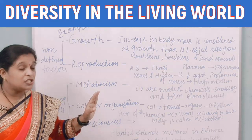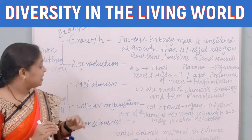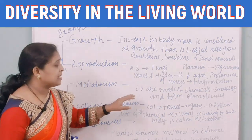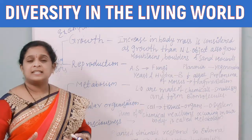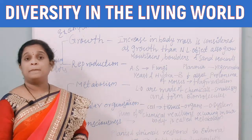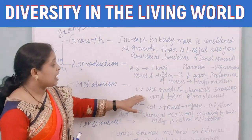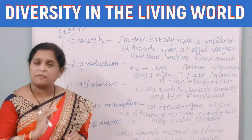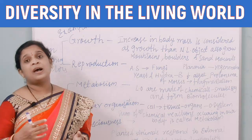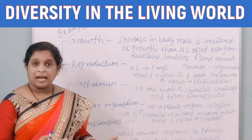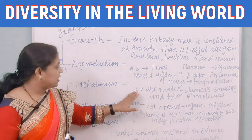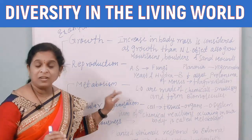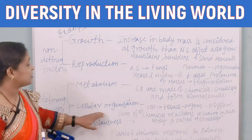So reproduction is also not considered a defining character — it comes under non-defining factors. The next one is metabolism. Living organisms are made up of so many chemicals; we have so many cells and those cells are made up of certain elements. Those elements join to form biomolecules. This happens in every organism, whether unicellular or multicellular. Metabolism is considered a defining factor to decide if something is living or non-living.